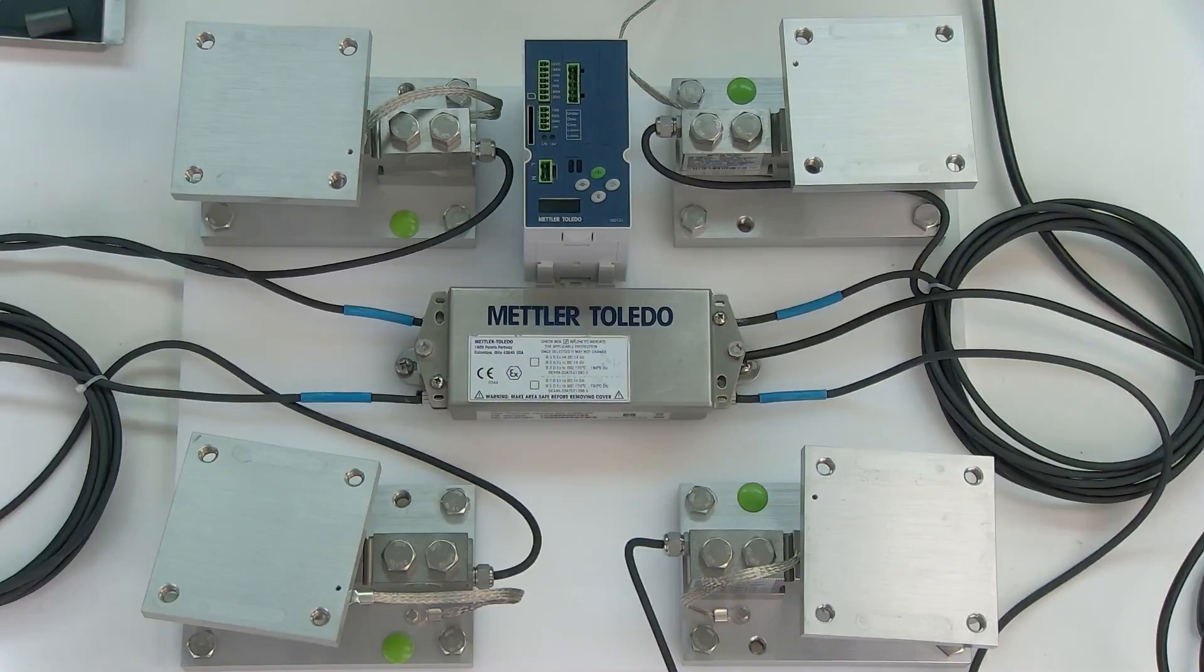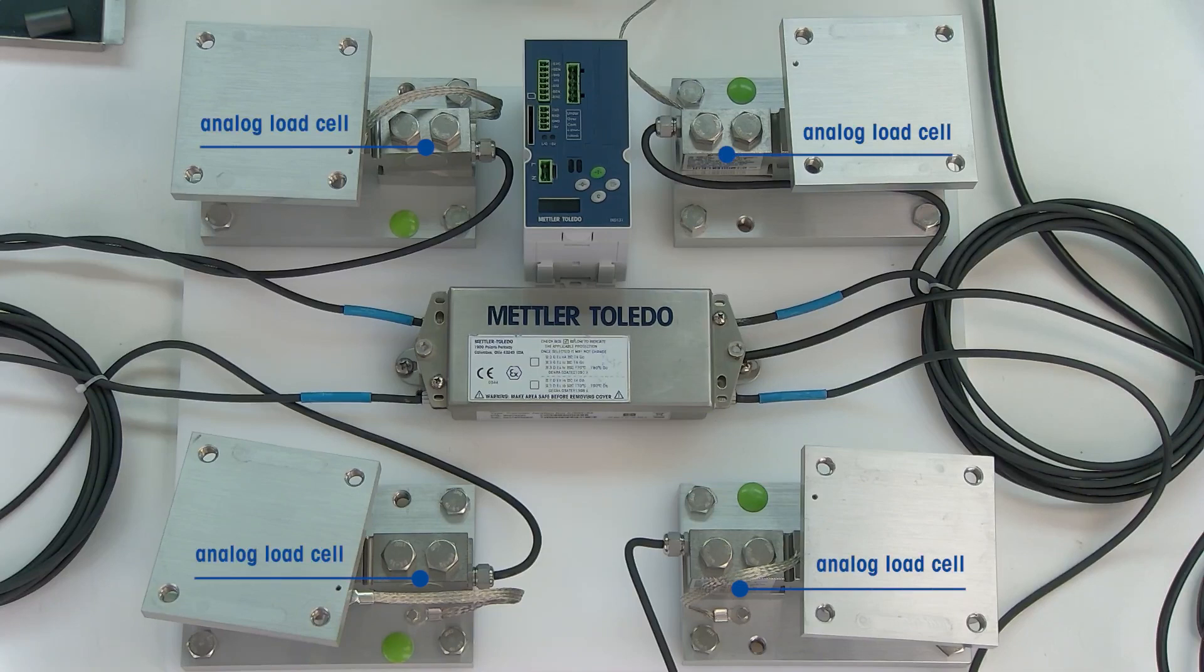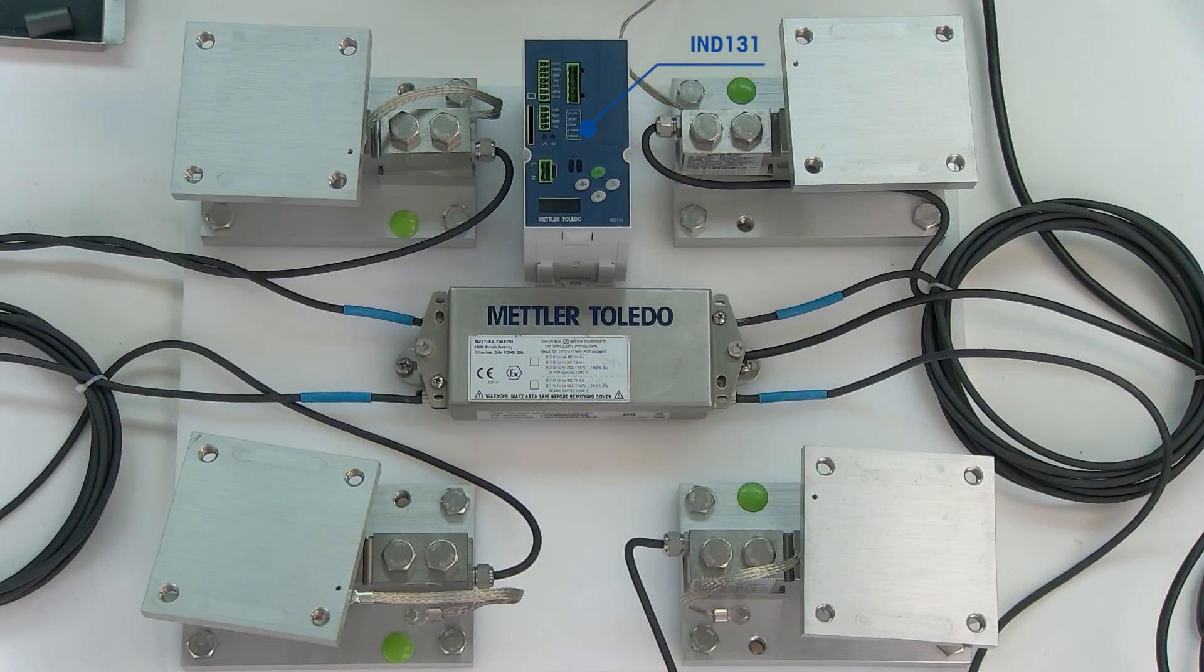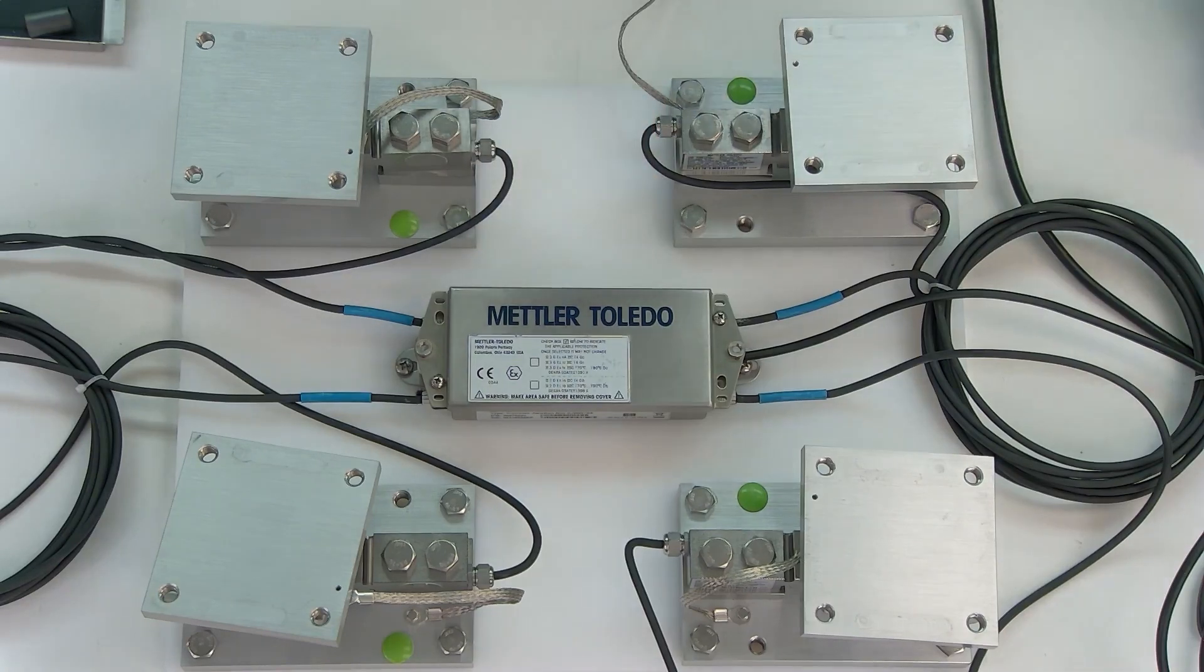So here we have a brownfield installation for analog load cells. You can see we have four analog load cells along with the standard analog junction box. The customer was previously using an older terminal like the IND 131 that we've gone ahead and removed from the cabinet, so we'll no longer need that in this installation.